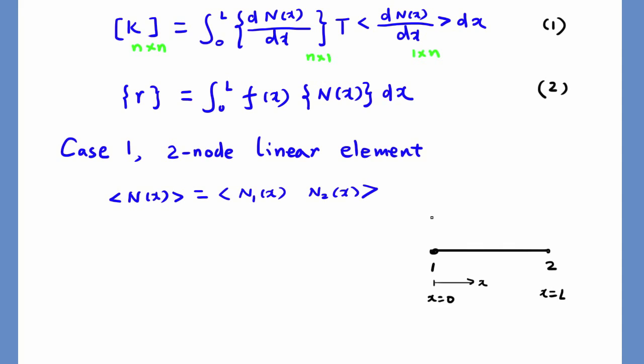For the first shape function, it should be equal to 1 at node number 1 and 0 at node number 2, with linear interpolation in between.